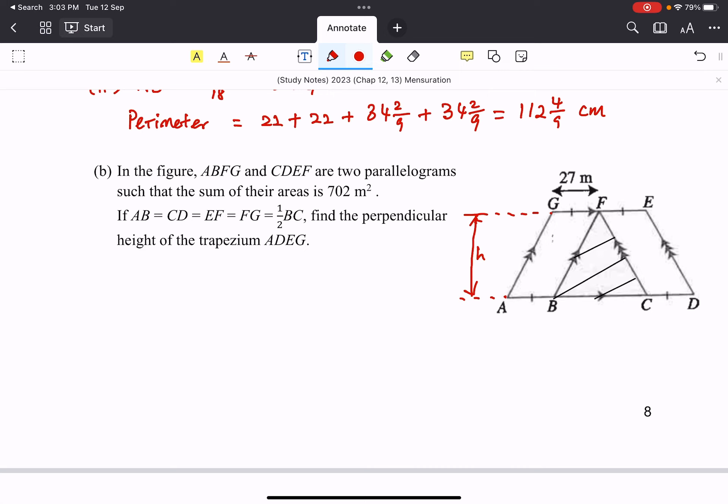Well, making use of our understanding of the area of parallelogram, we know that two times the parallelogram, times the base, 27 times the height, will give us 702. So 702 is actually two times of the parallelogram.